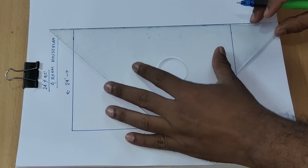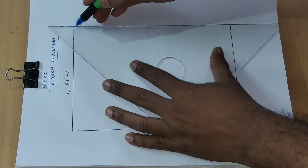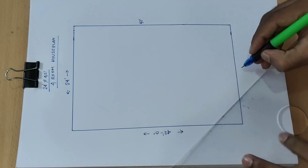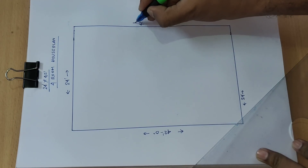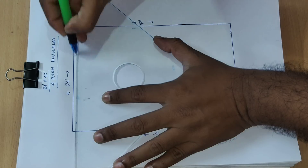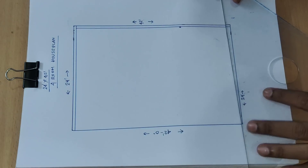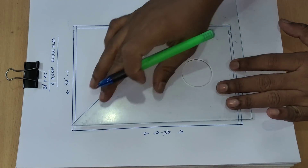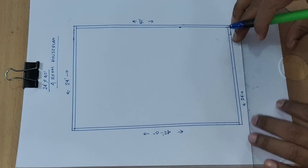This side is 24 feet. The outside wall will have 125 mm thickness. Okay, next.